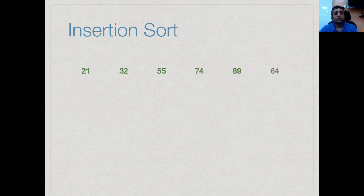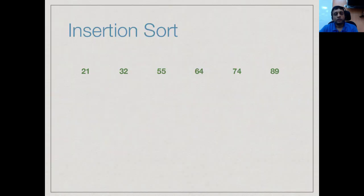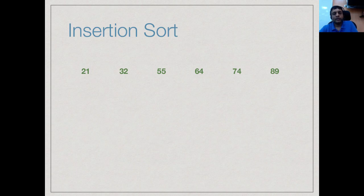And the last round, I will take 64. So now this part is all sorted. I will take 64 and try to insert it here. It will swap with 89, it will swap with 74, and then stop. So this is how insertion sort works. This is a very intuitive sort. If you take a pack of cards and try to sort it, typically this is how you would sort.